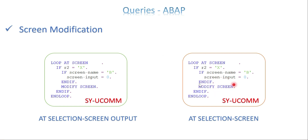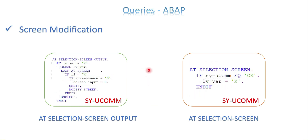The conclusion is: if you don't need any user command and simply want to do a screen modification on selection, go to AT SELECTION-SCREEN OUTPUT only. But if the screen modification is based on a user command, then you need AT SELECTION-SCREEN as well to capture SYSSC_UCOMM, since that value is not available in AT SELECTION-SCREEN OUTPUT.